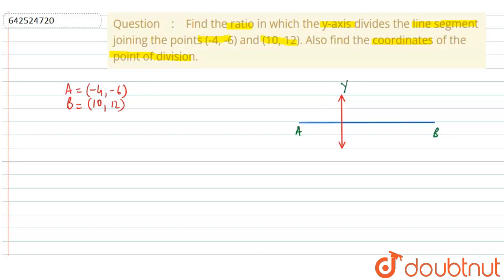It is given that y-axis, let this be the y-axis, divides the line segment. Let it divide in the ratio of M is to N and we will call this the point of division. Because it is on the y-axis, we can name it as (0, y).